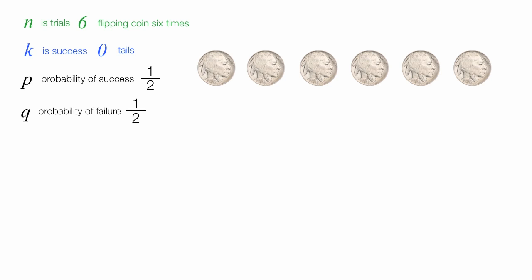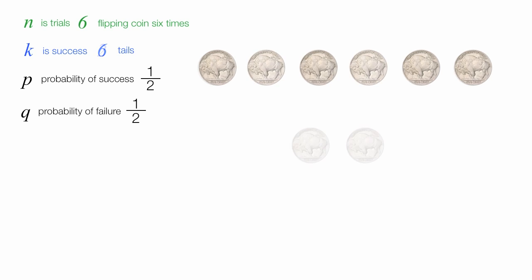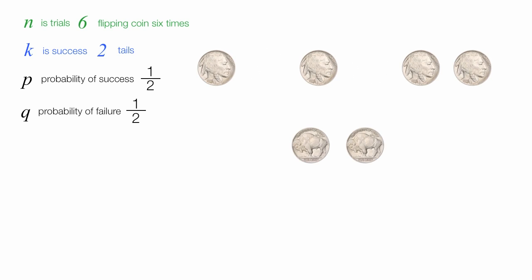I will show you the calculation for getting zero tails and also the calculation for getting six tails. But first, what is the probability of getting exactly two tails?